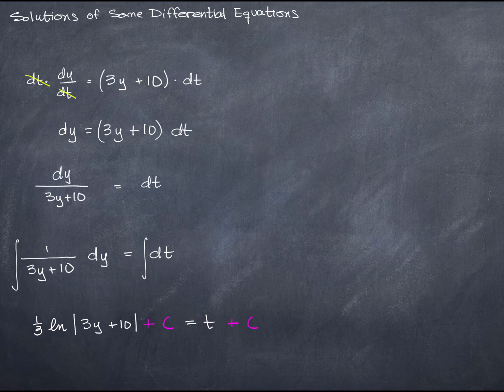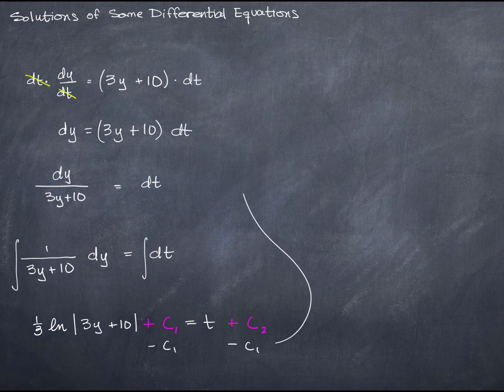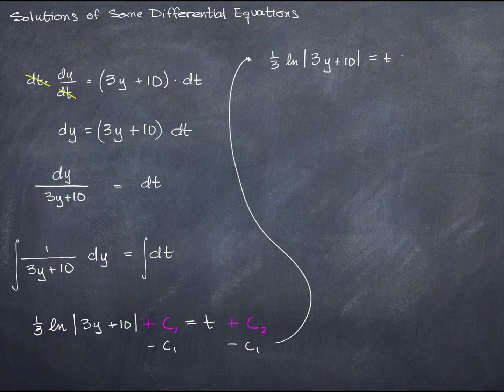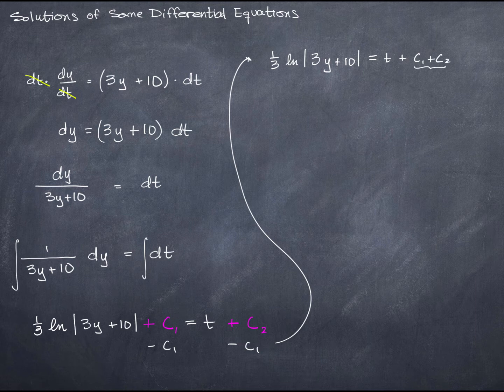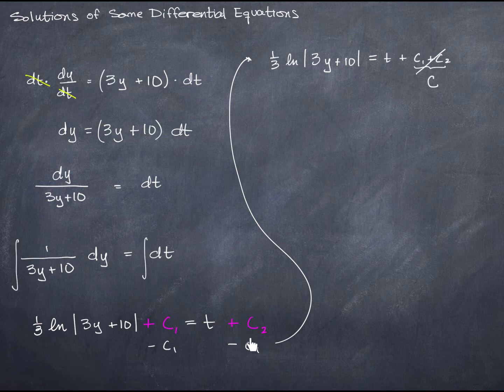I'm going to call this c1 and c2 because they could be different. And in fact, if I subtract c1 from both sides, then I'll end up with my equation looking like this: 1 third the natural log of 3y plus 10 equals t plus c1 minus c2. Well, c1 minus c2, those are both constants. So this is still a constant, and I could just write plus c. And I could have done that all the way down here. I could just have left this one off and added a plus c here.